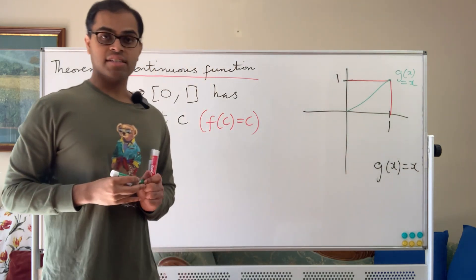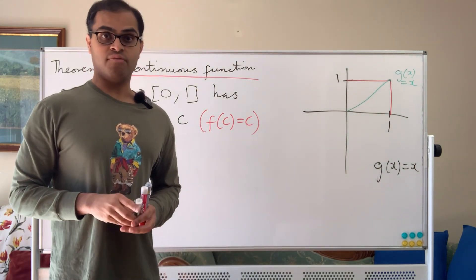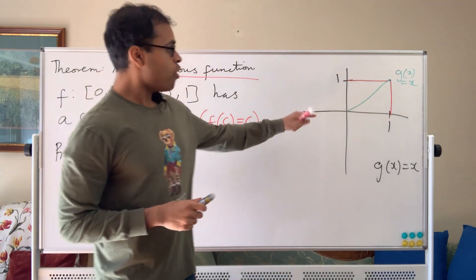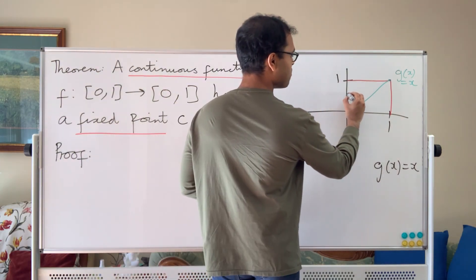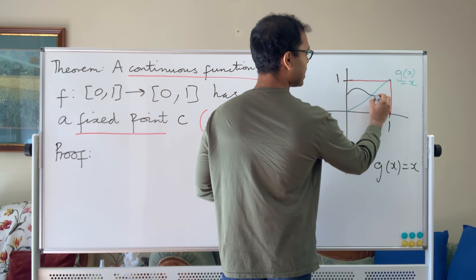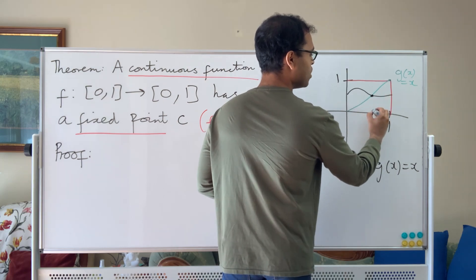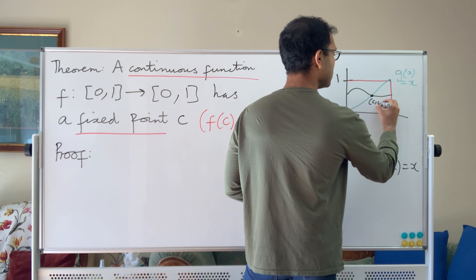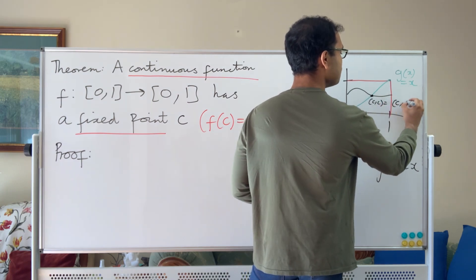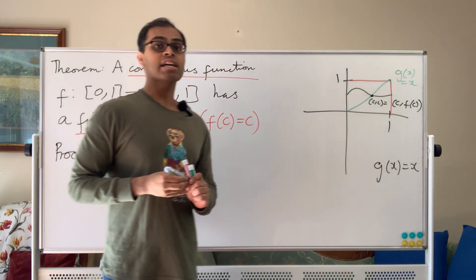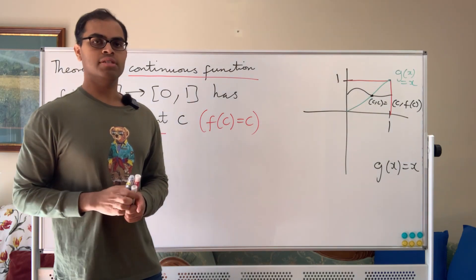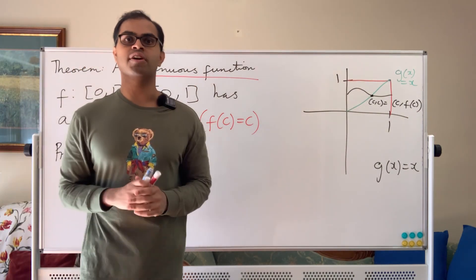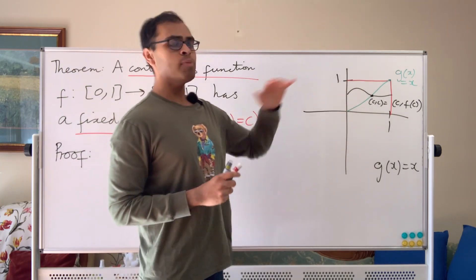The graph of f(x), we want to show it intersects the graph of g. If we can show that, then we have solved the problem. Because the point where the graphs intersect is a point on the line y equals x, so it's a point (c, c), but it's also a point on the graph of f, so it is (c, f(c)). Therefore, it has to be a point c where f(c) equals c. We have converted the problem into showing the graphs of two continuous functions intersect.